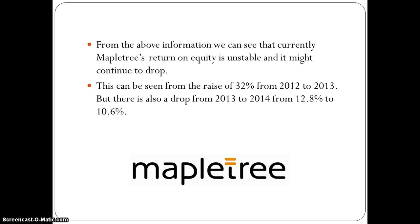From the above information, we can see that currently Maple Tree's Return on Equity is not very stable and it might continue to drop or it might continue to rise, but it is very hard to tell. The instability can be seen from the rise of 32% from 2012 to 2013, but there is also a sharp drop from 2013 to 2014, from 12.8% to 10.6%.